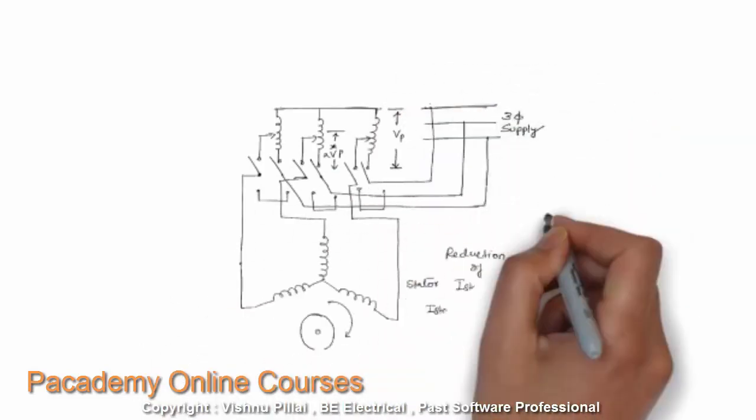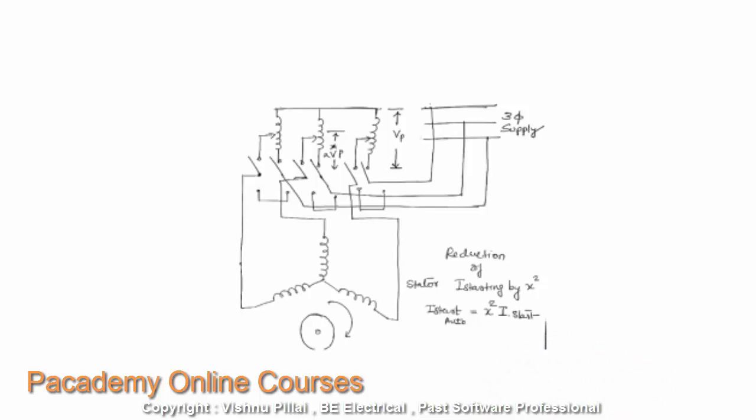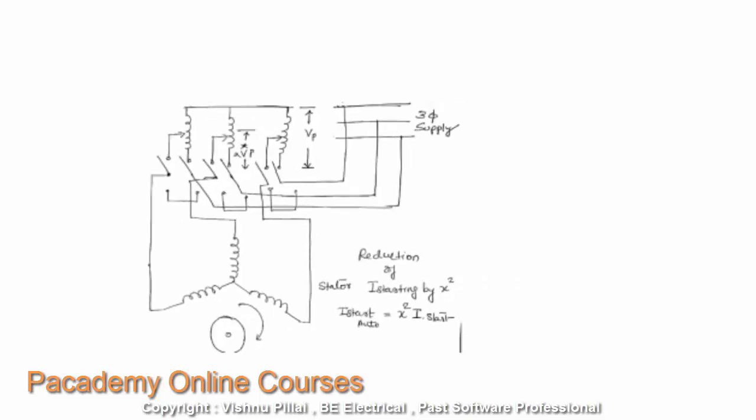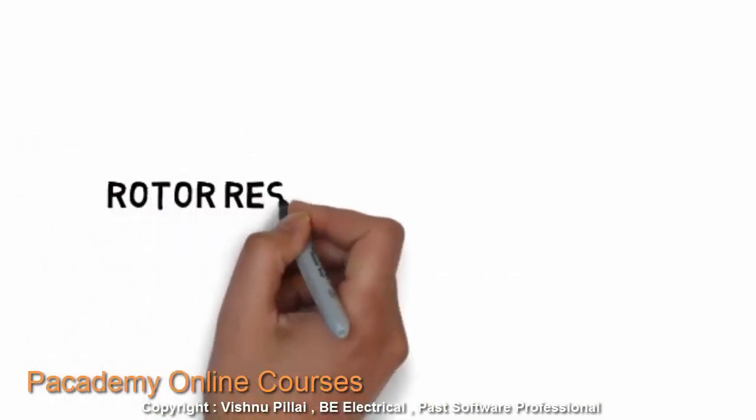Another arrangement is to use three-phase auto-transformers connected together in star, which are then connected to the induction motor stator and to the three-phase supply. While the motor is starting, the voltage can be reduced according to the transformation ratio of the auto-transformer, stepping it down from the supply voltage to any desired value as required by the motor rating. If the voltage is reduced by a factor x (the transformation ratio), then the starting current will also be reduced by x² times the starting current without any starting arrangement.